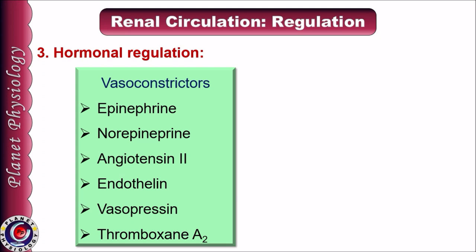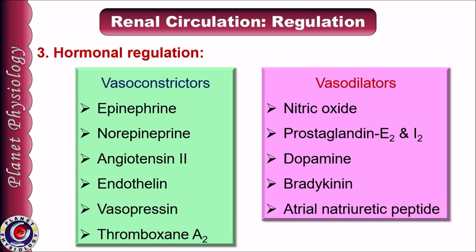For hormonal regulation, vasoconstrictors include epinephrine, norepinephrine, angiotensin-2, endothelins, vasopressin, and thromboxane A2 — all of which reduce renal blood flow. Vasodilators include nitric oxide, prostaglandin E2 and I2, dopamine, bradykinin, and atrial natriuretic peptide, which cause renal vasodilation and hence an increase in renal blood flow.